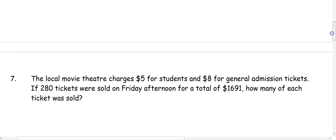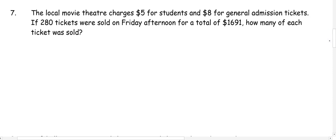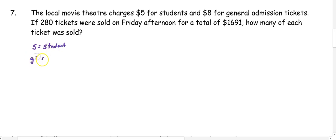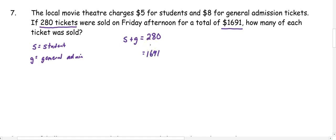Now let's look at some word problems. Number 7: the local movie theater charges $5 for students and $8 for general admission tickets. If 280 tickets were sold on Friday afternoon for a total of $1,691, how many of each ticket were sold? We identify our variables: S for student and G for general admission. For the total number of tickets: S plus G equals 280. For the total money: 5S plus 8G equals $1,691.